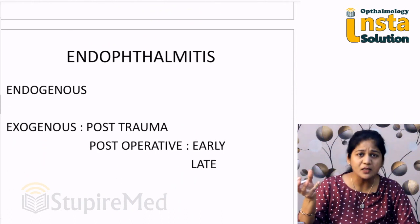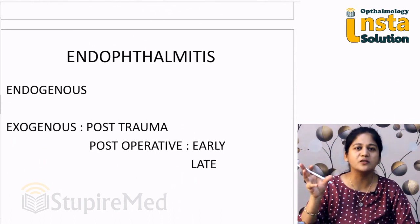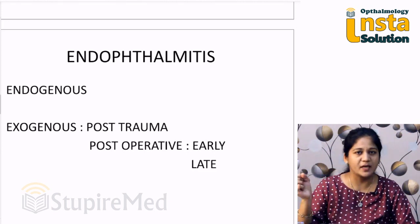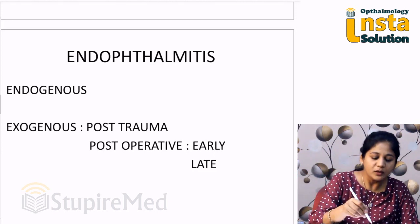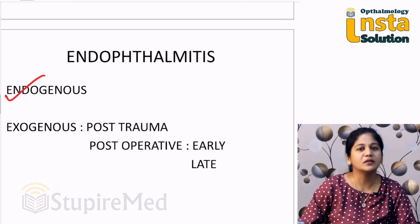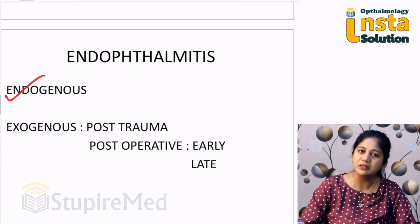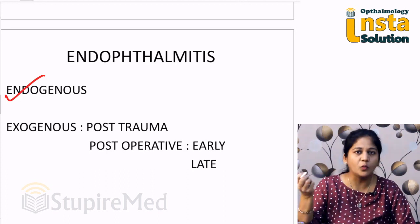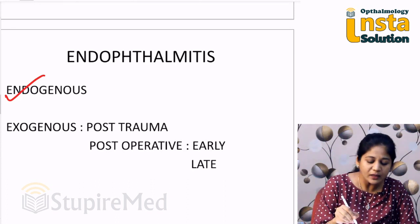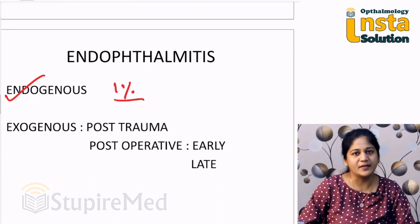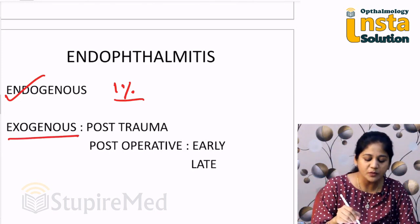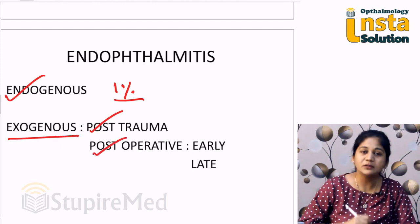By the term endophthalmitis, it means there is a very severe inflammation of the inner coats of the eyeball with vitreous exudation. You can have endogenous cases of endophthalmitis where you have either an immunocompromised state or any systemic infection in the body which can travel to the eye. Most cases, however, come from an exogenous source — either post-trauma or after surgery in the eye.